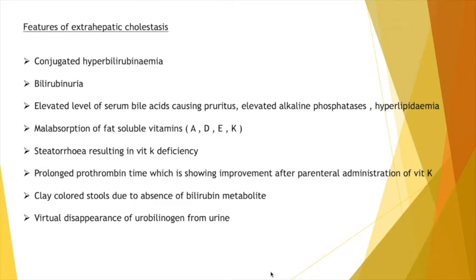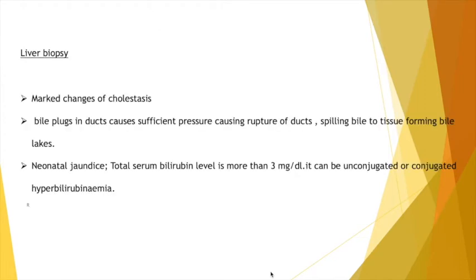There is also virtual disappearance of urobilinogen from urine, since bilirubin is not reaching the intestine, resulting in absence of urobilinogen. Additionally, there will be clay-colored stools due to absence of bilirubin metabolites. In the liver biopsy of extrahepatic cholestasis, compared to intrahepatic, there will be marked changes. The bile plugs in ducts cause sufficient pressure leading to rupture of ducts, resulting in spilling of bile into the tissues, forming bile lakes.